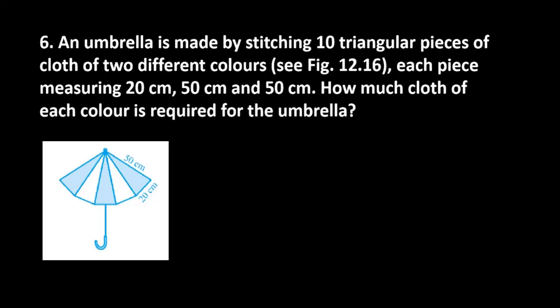Let's start with question number 6. It says an umbrella is made by stitching 10 triangular pieces of cloth of two different colors. Each piece measuring 20 cm, 50 cm and 50 cm. How much cloth of each color is required for the umbrella?